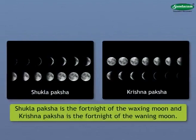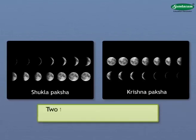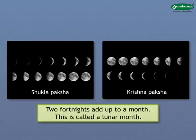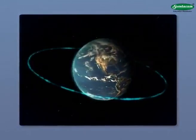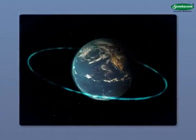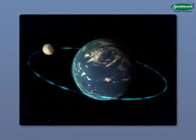Shukla Paksh is the fortnight of the waxing Moon and Krishnapaksh is the fortnight of the waning Moon. Two fortnights add up to a month. This is called a Lunar month. Thus, due to the revolution of the Moon around the Earth, we have got month as a unit of time measurement.